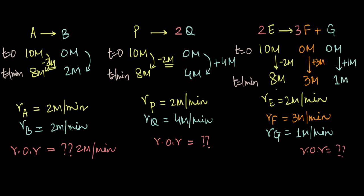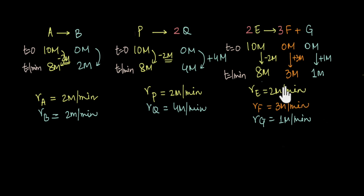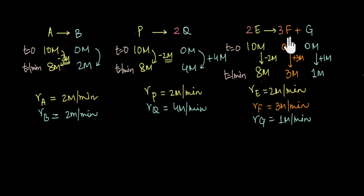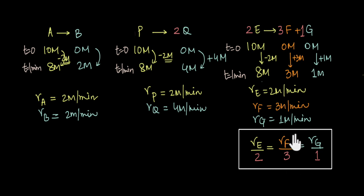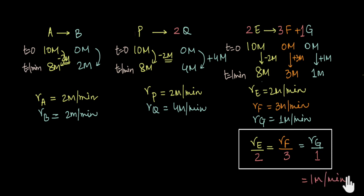Let us now step back and analyze these three reactions. Let us start by analyzing the rate of the reactants and the rate of the products for the reaction 2E→3F+G. If we divide each of these rates by their respective stoichiometric coefficients — dividing rate of E by 2, rate of F by 3, and rate of G by 1 — we will see that all these values turn out to be equal. Rate of E divided by 2 is 1 molar per minute. Rate of F divided by 3 is also 1 molar per minute. Rate of G divided by 1 is also 1 molar per minute.